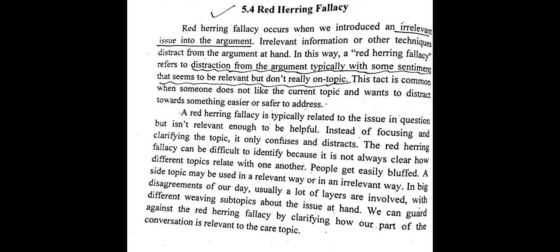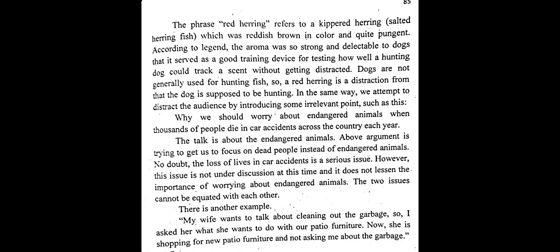If we can clarify and identify the red herring fallacy, only then can we stay focused on our original topic. The term refers to a salted herring fish which was reddish-brown in color and had a very strong, unpleasant smell. According to legend — as I mentioned earlier — the red herring fallacy is named after this dog hunting technique. The aroma was so strong that it served as a training device for testing how well a hunting dog could track a scent without getting distracted.